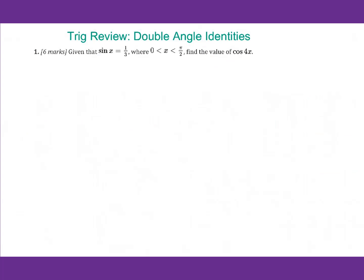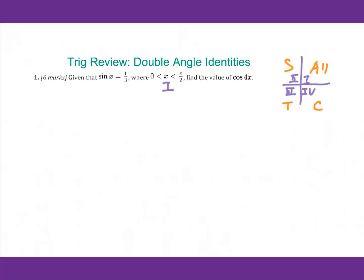Now let's go to the first question. Number one: given sine theta equals 1 over 3, where x is greater than 0 and less than pi over 2. That means this is the first quadrant. For the first quadrant, we use 'all students take calculus,' so all trig functions are positive — we have C, S, T all positive.